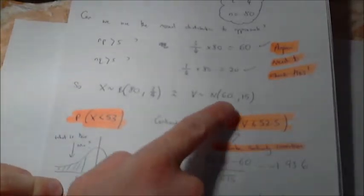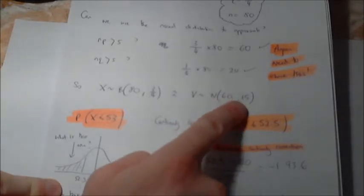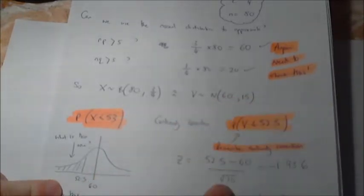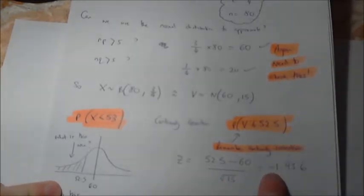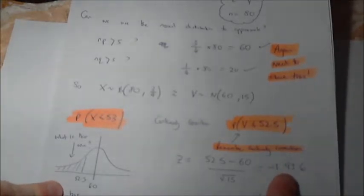Again, watch out. Remember, in the normal distribution, this value here is the variance. To find the standard deviation, you need to square root it. So once you've done that, you get the answer of minus 1.936. And that's the chance I've probably rounded this to three decimal places. So again, I'm going to draw myself another diagram. Here's the next diagram.